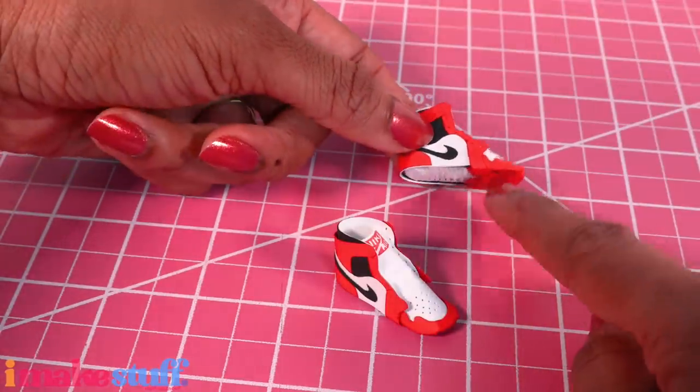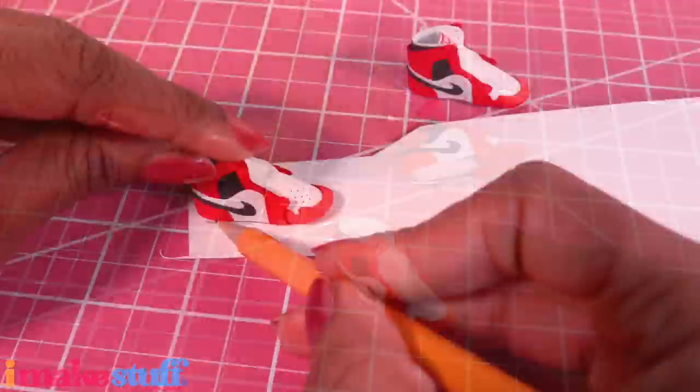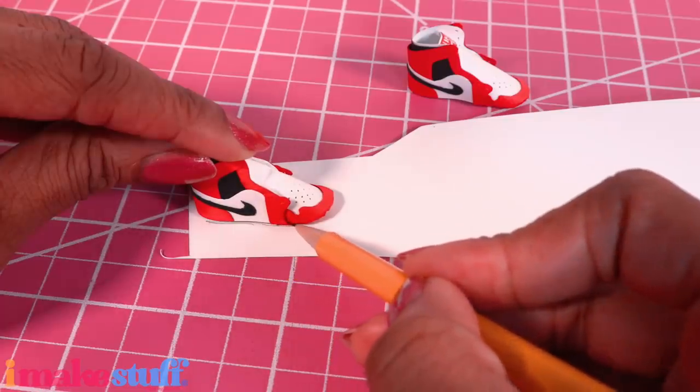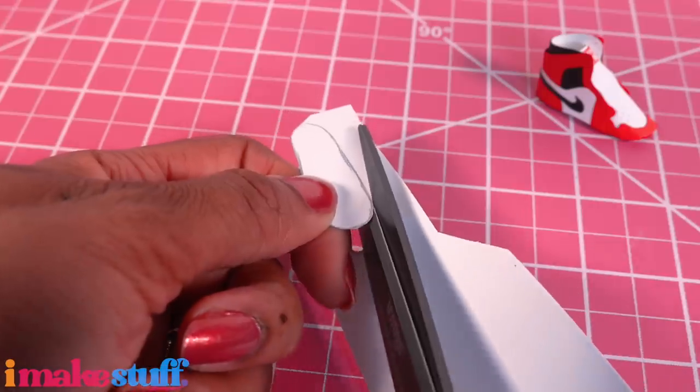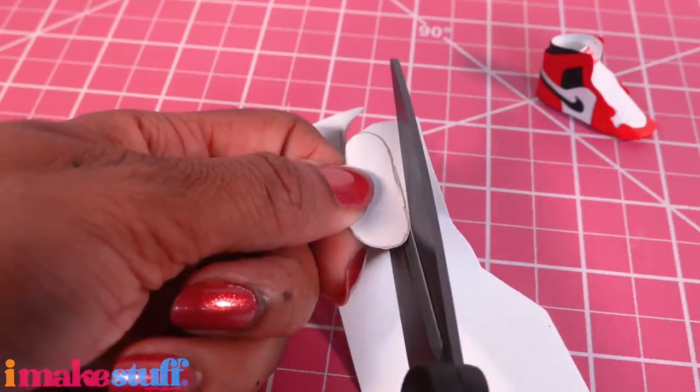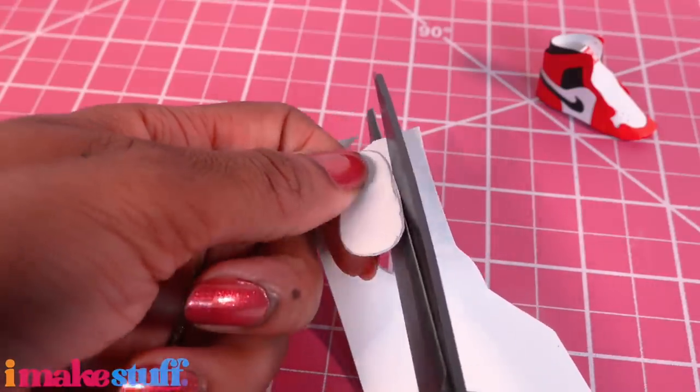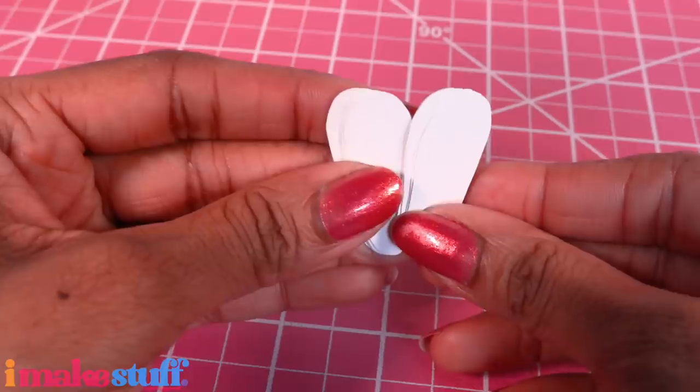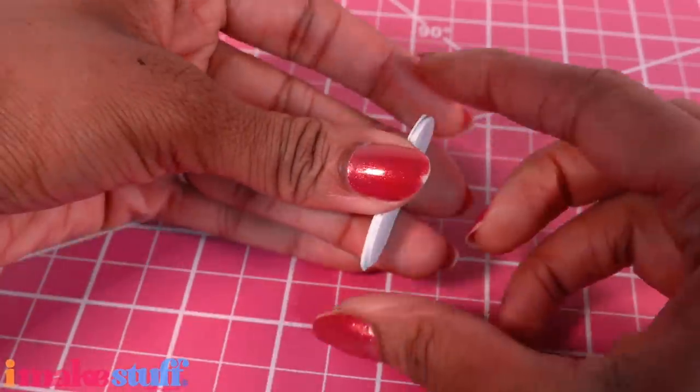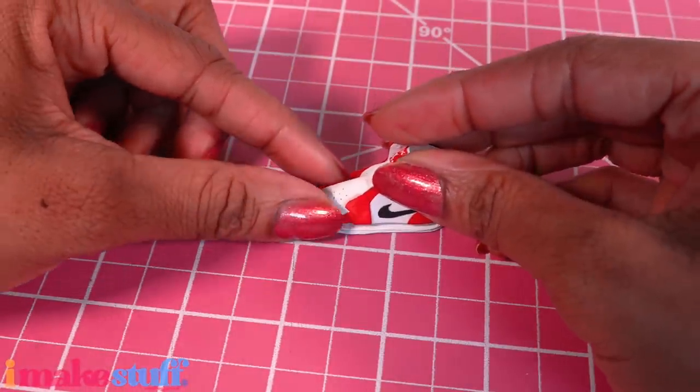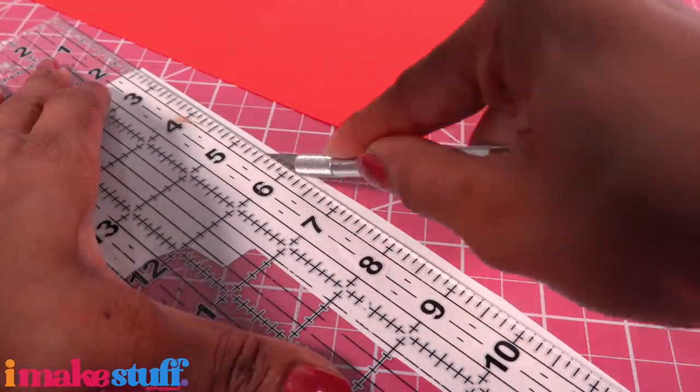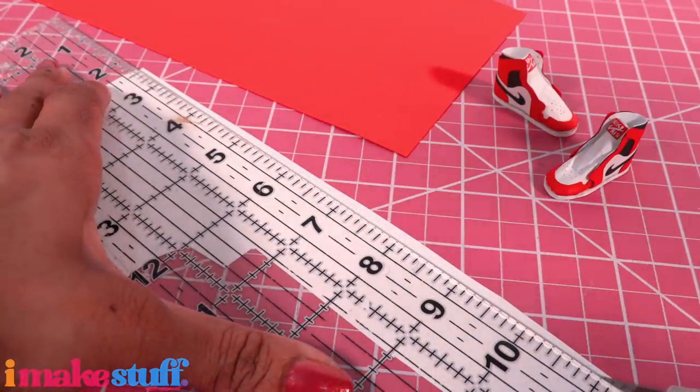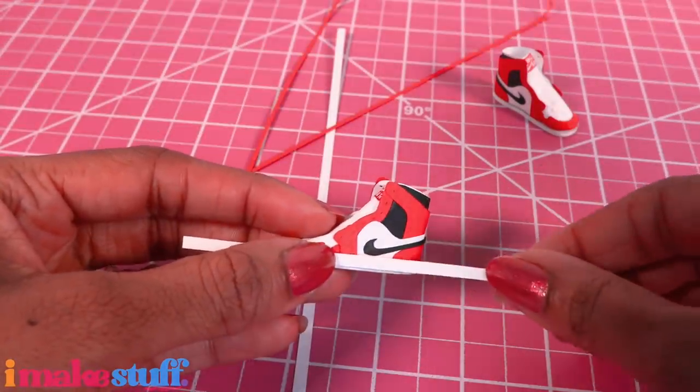While waiting for that to dry, let's do the bottom of the shoes. Trace the bottom on leftover cardstock, cut it out and repeat about seven more times per shoe. I did eight and I'm gonna stack and glue them all together. Glue it onto the bottom. Cut thin strips of white and red paper. Wrap the white around the bottom followed by a thin line of red.